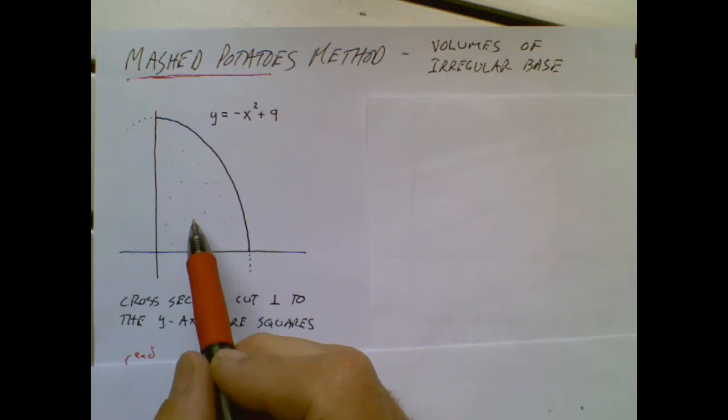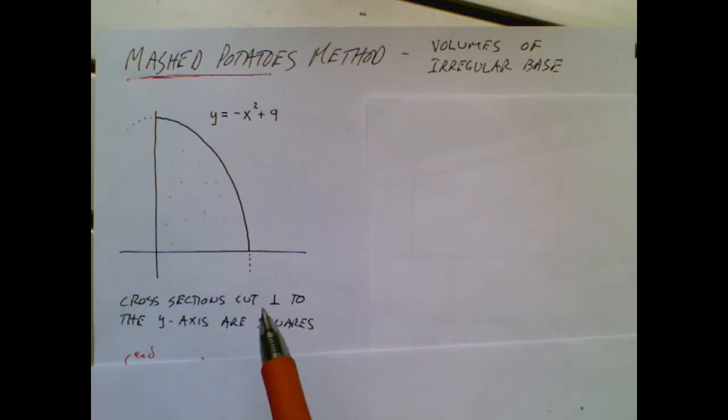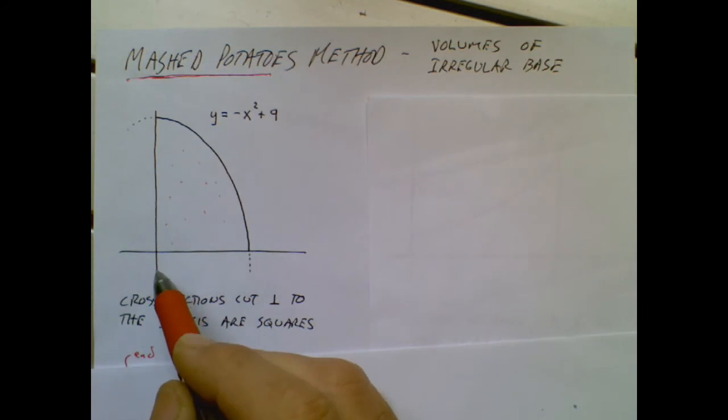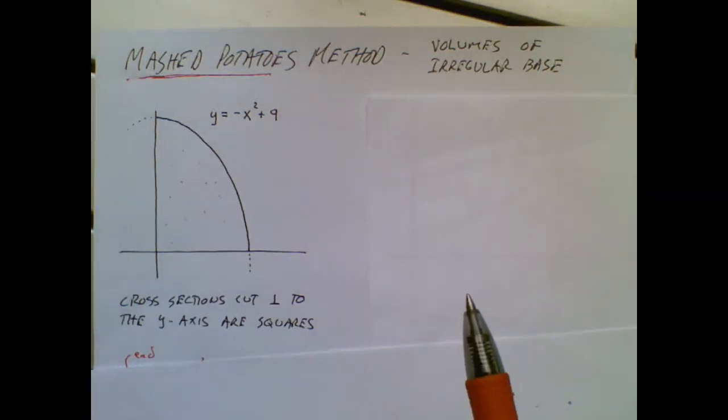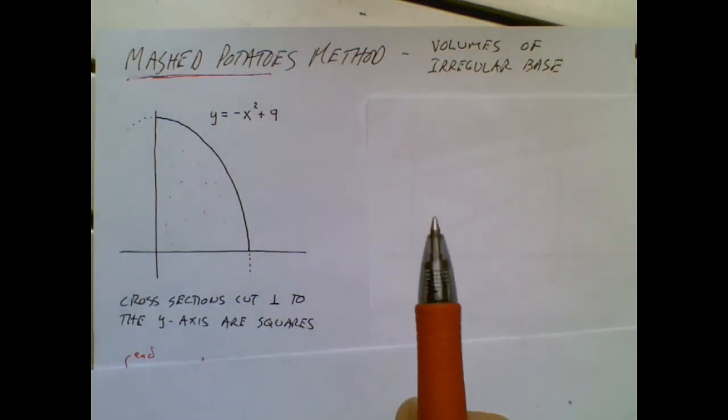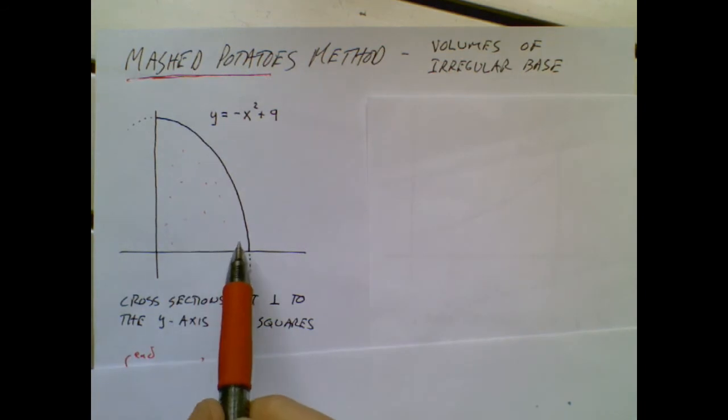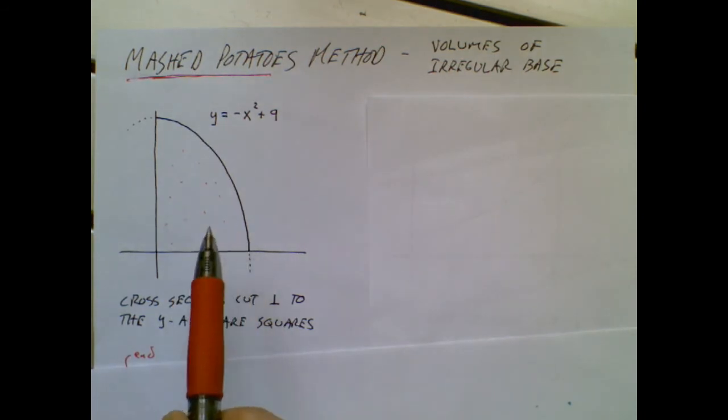Instead of that, this region is going to act like a base of a geometric figure. So imagine that this is the outline of the base of a pile of mashed potatoes. The mashed potatoes are kind of coming out.